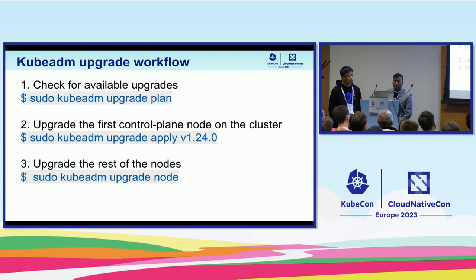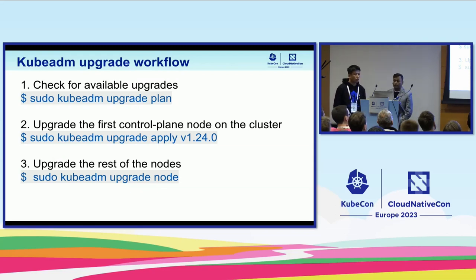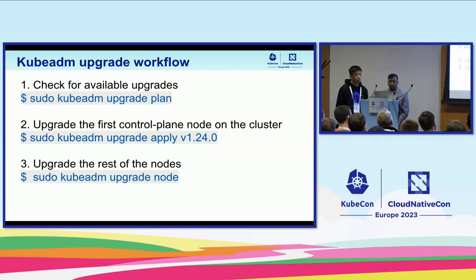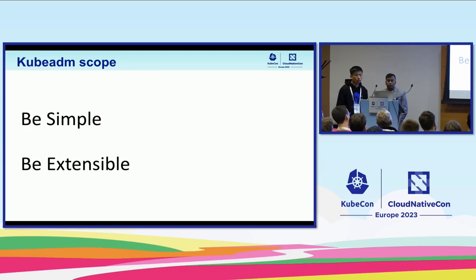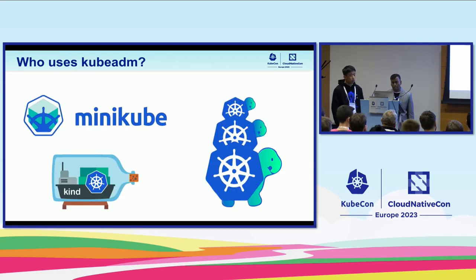Coming to the kubeadm upgrade workflow: you need to check for available upgrades if you want to upgrade your Kubernetes cluster. You run kubeadm upgrade plan — it will fetch the version you need to upgrade to. After fetching the version, you upgrade the first control plane node, and you run kubeadm upgrade apply to the version you want to upgrade to. The third step is upgrading the rest of the nodes using the kubeadm upgrade node command. Kubeadm's scope is simple and extensible — it is divided into various phases such as the pre-flight phase, certificate generation phase, and mark control phase. It's a highly extensible solution.